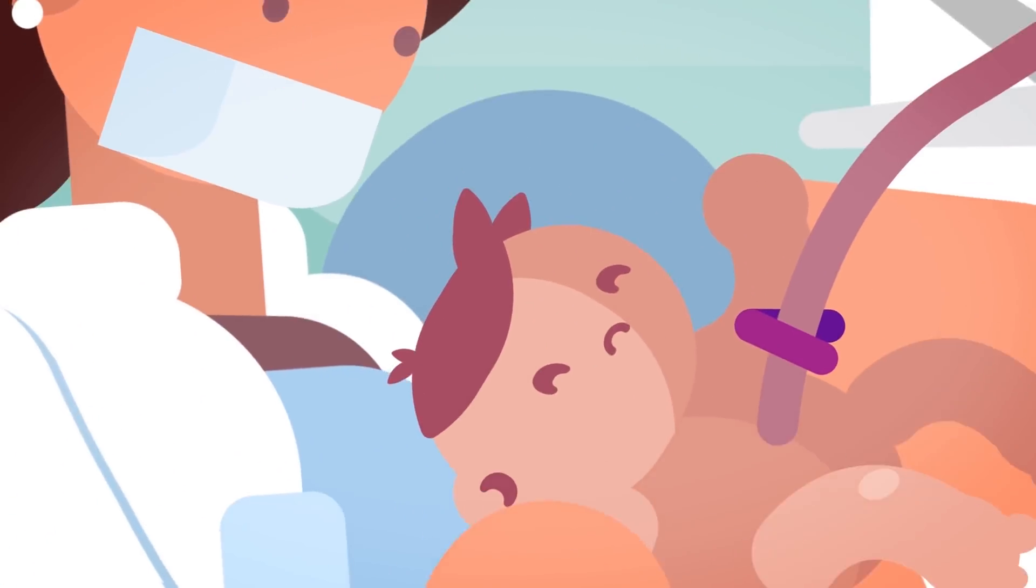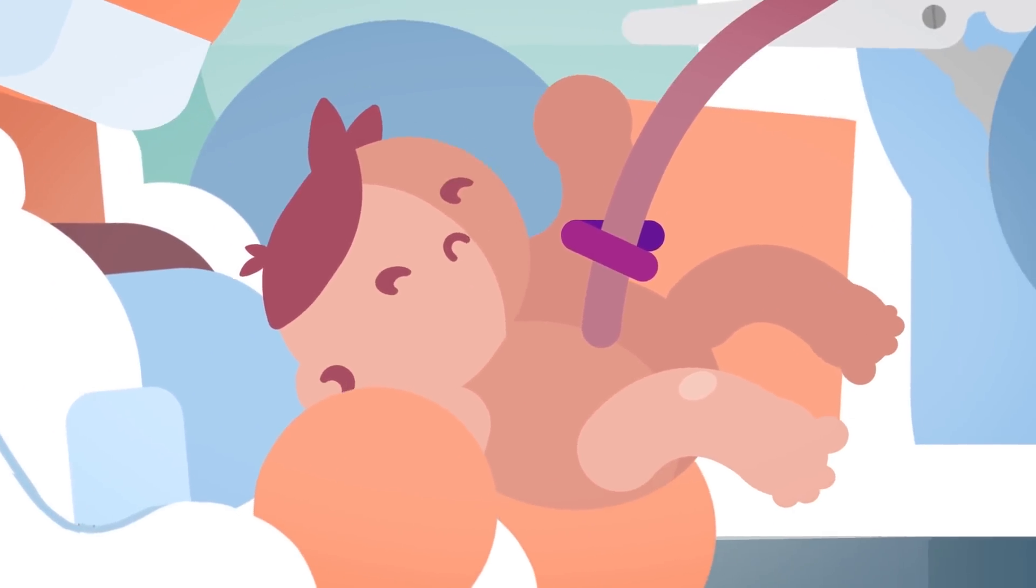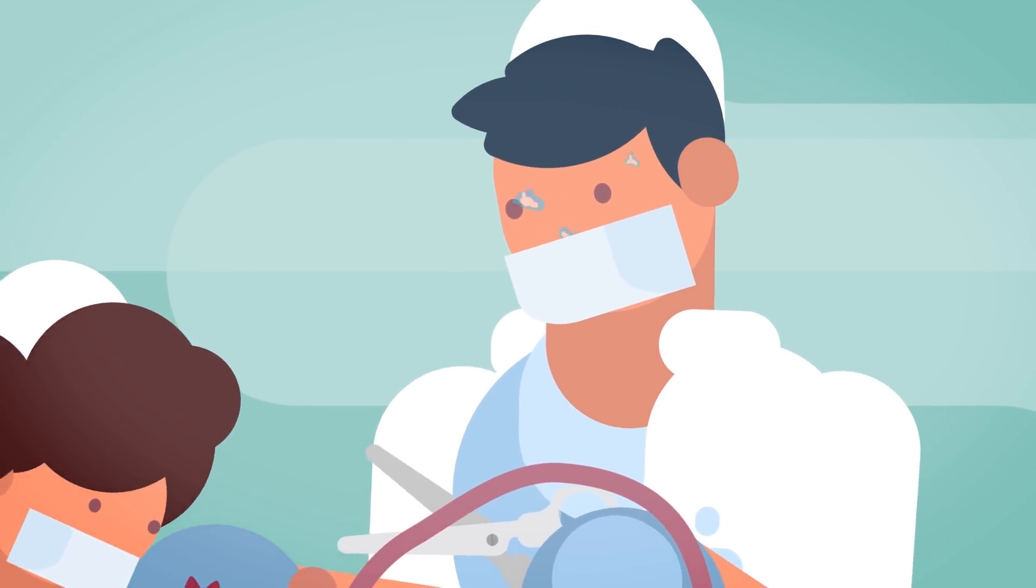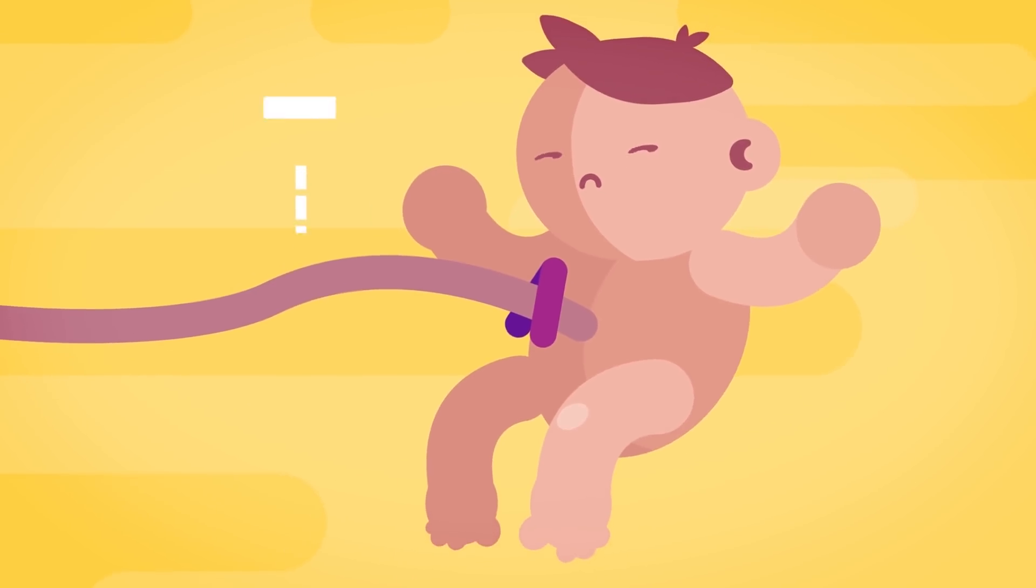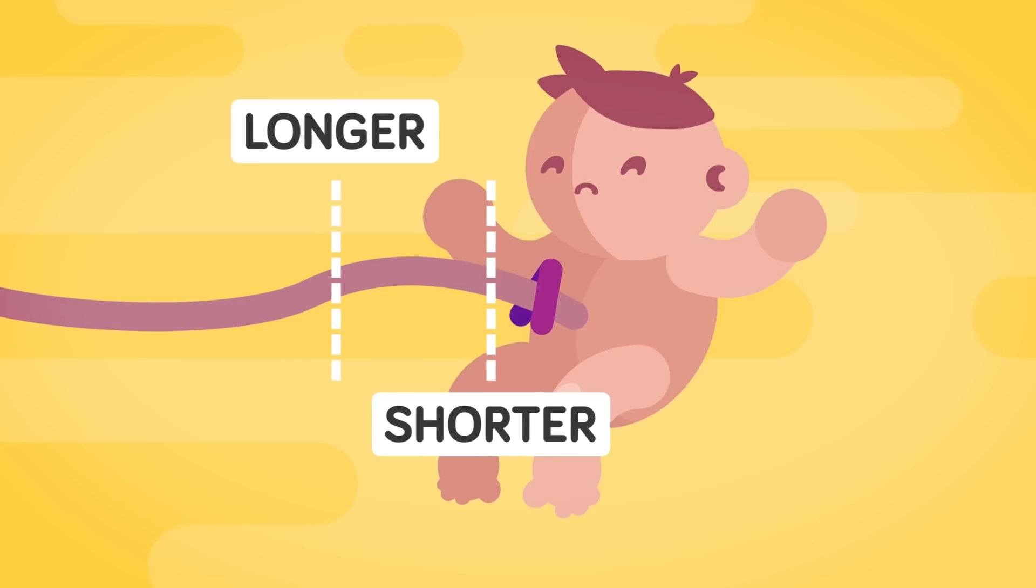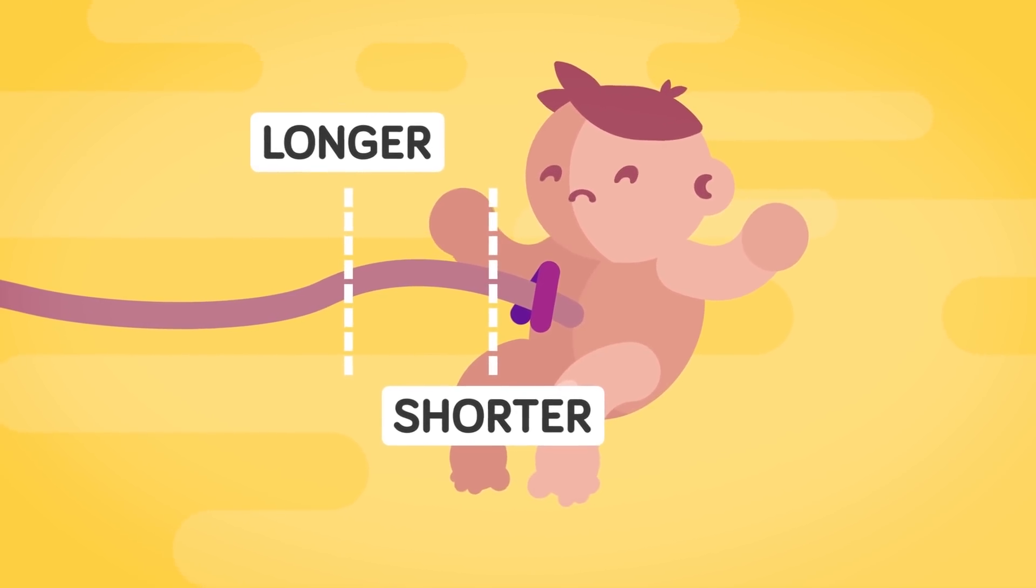Contrary to popular belief, the doctor who cuts the umbilical cord has very little control over whether the baby will have an innie or an outie. Cutting the umbilical cord longer or shorter doesn't guarantee an innie or outie belly button will form. So unfortunately, we can't request our preferred belly button type at birth.